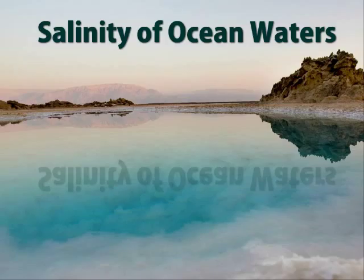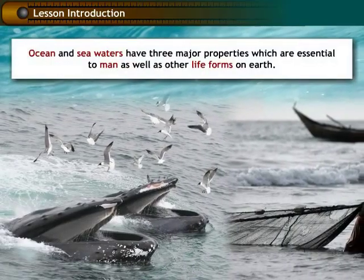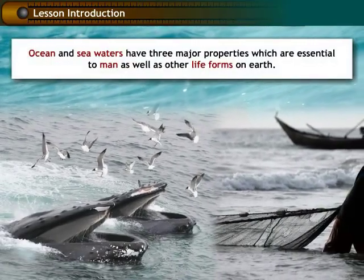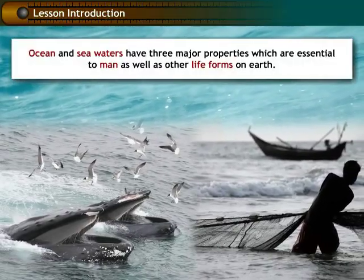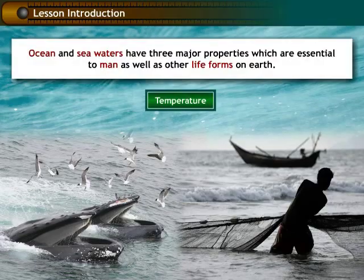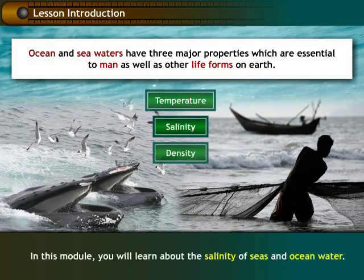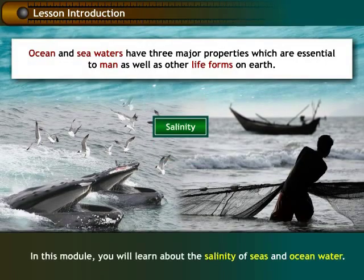Ocean and sea waters have three major properties which are essential to man as well as other life forms on earth. These properties are temperature, salinity, and density. In this module, you will learn about the salinity of seas and ocean water.